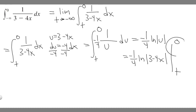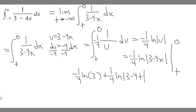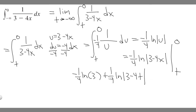So now we can evaluate it at our bounds — zero and t. Plugging in zero: minus one over four times the ln of three minus four times zero. Four times zero is zero, three minus zero is three, so we get the ln of three. That's the first part. Then minus plugging in t: minus times minus one over four becomes positive, so it's plus one over four times the ln of the absolute value of three minus four t. And don't forget, we have to evaluate this as a limit, so we have the limit as t approaches negative infinity of this whole expression.